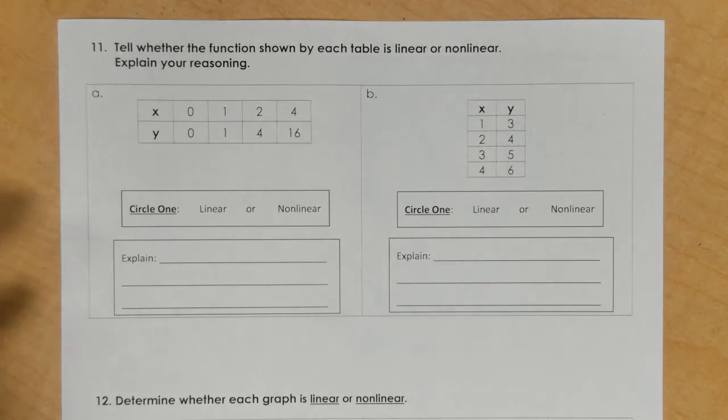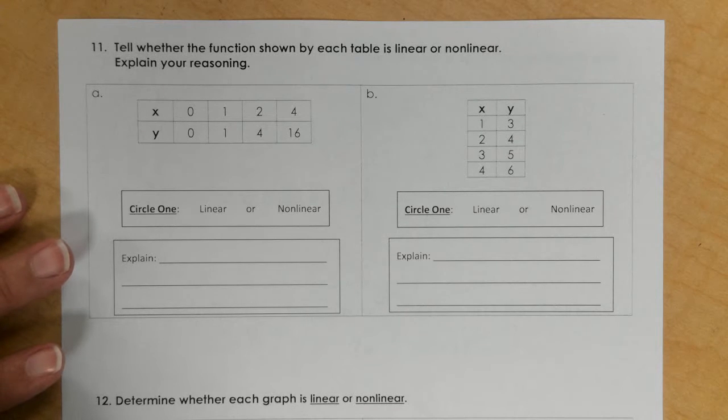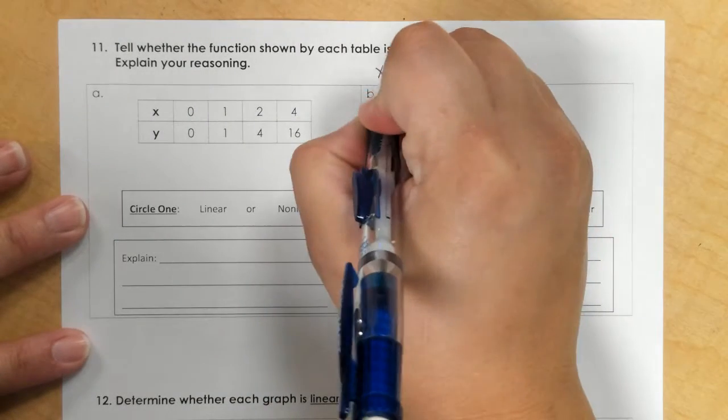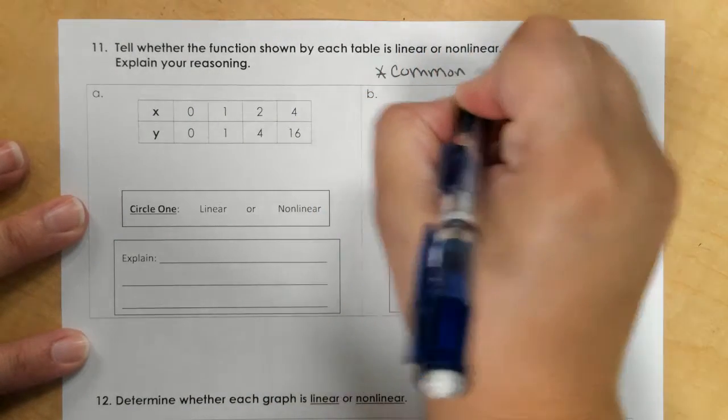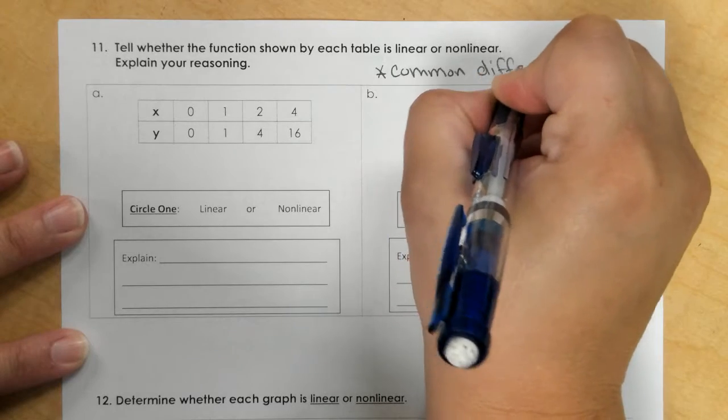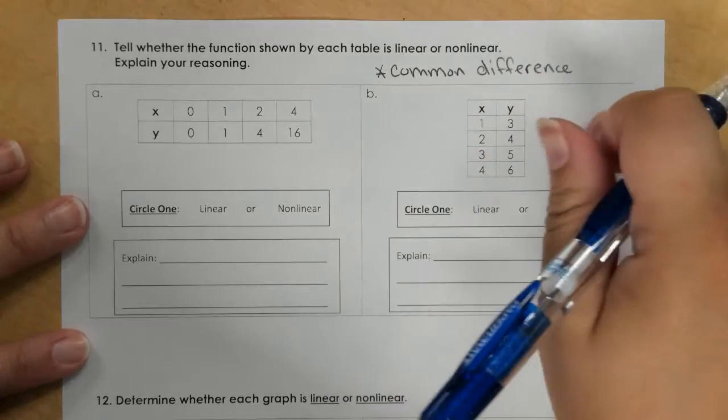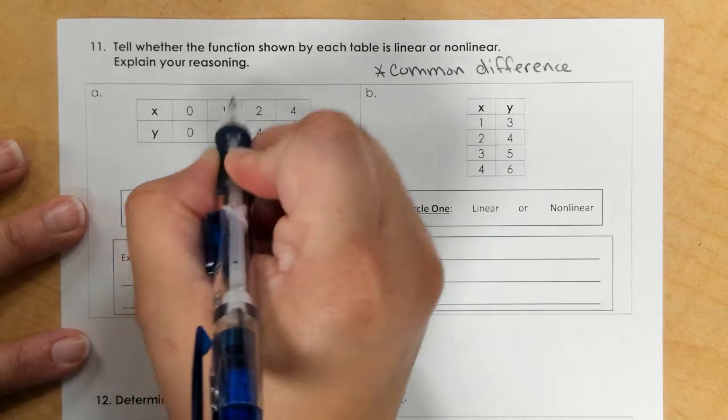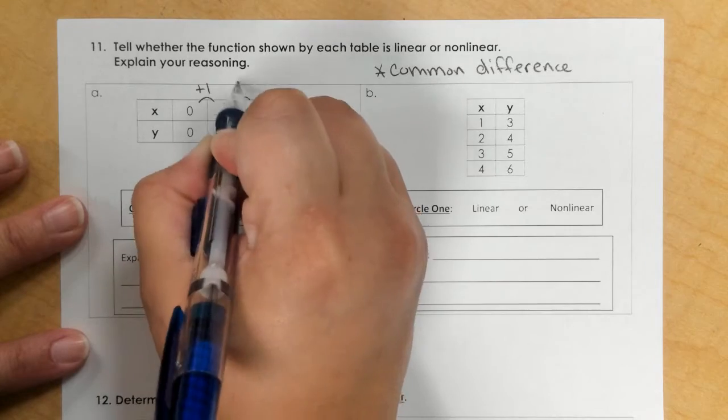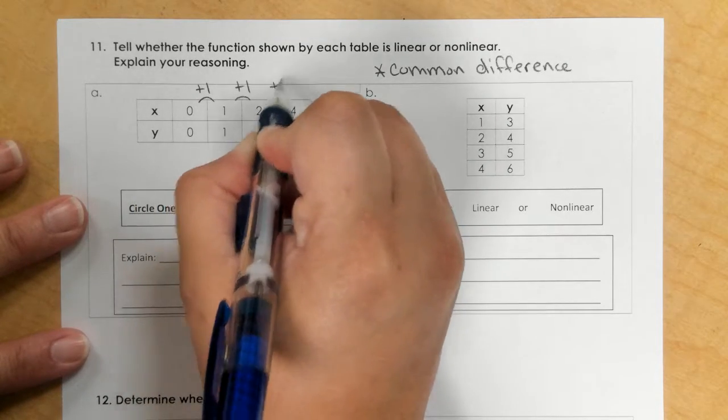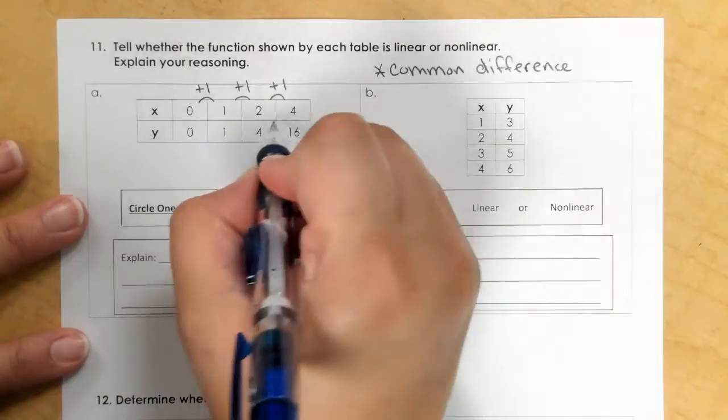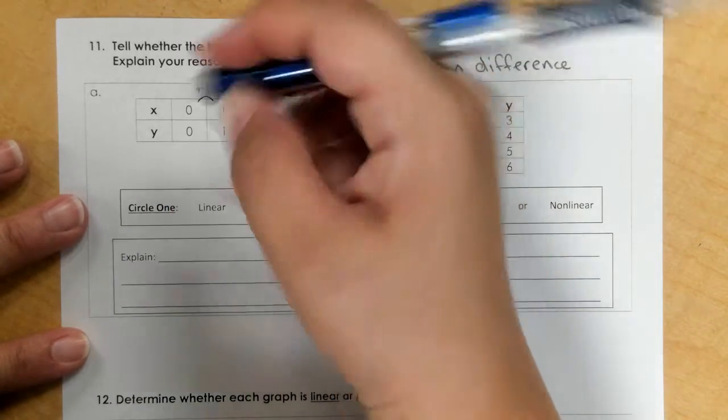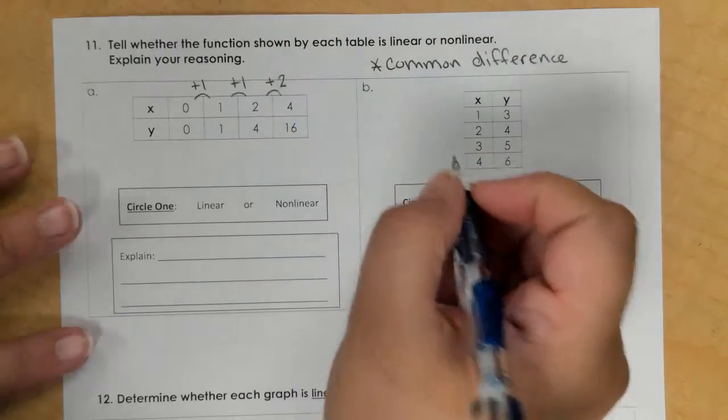Number 11: Tell whether the function shown by each table is linear or nonlinear. We're looking for a common difference, meaning we want the same number on the x's and y's to make it linear. From 0 to 1, that's an increase of 1. 1 to 2, increase of 1. 2 to 4, increase of 2.